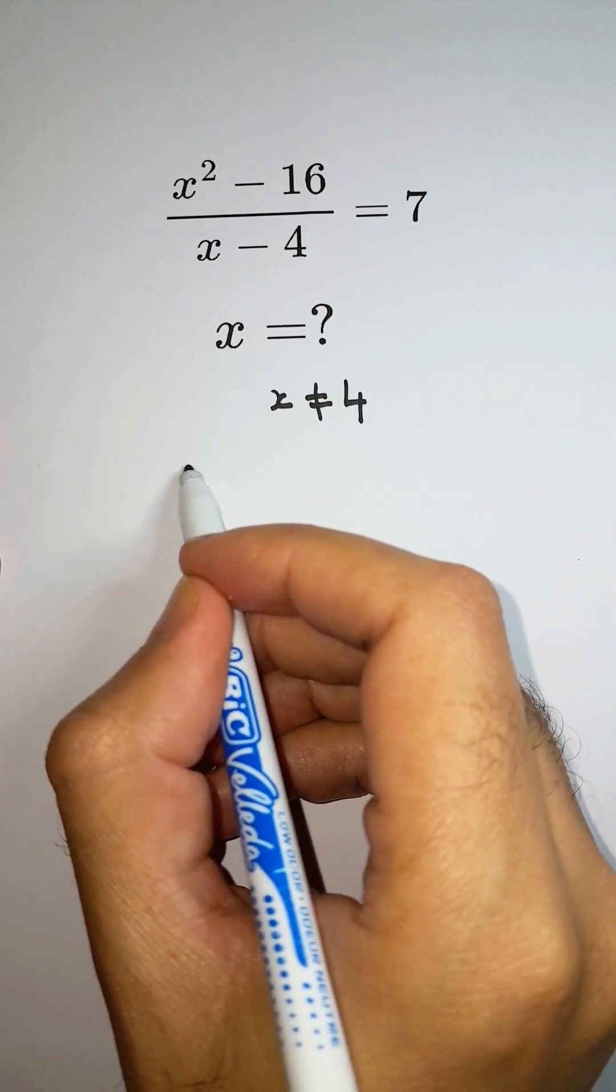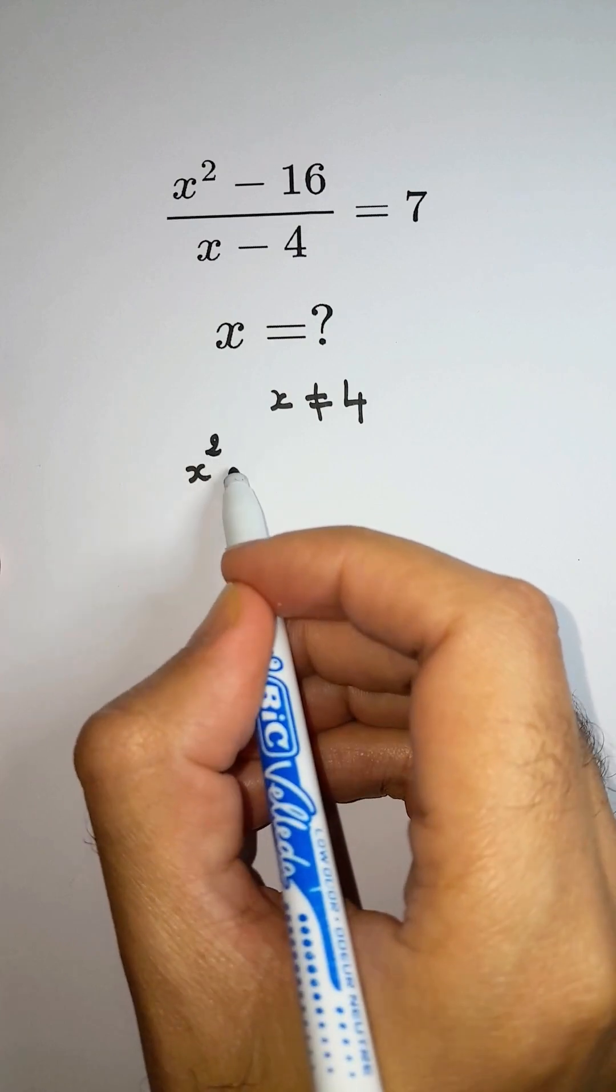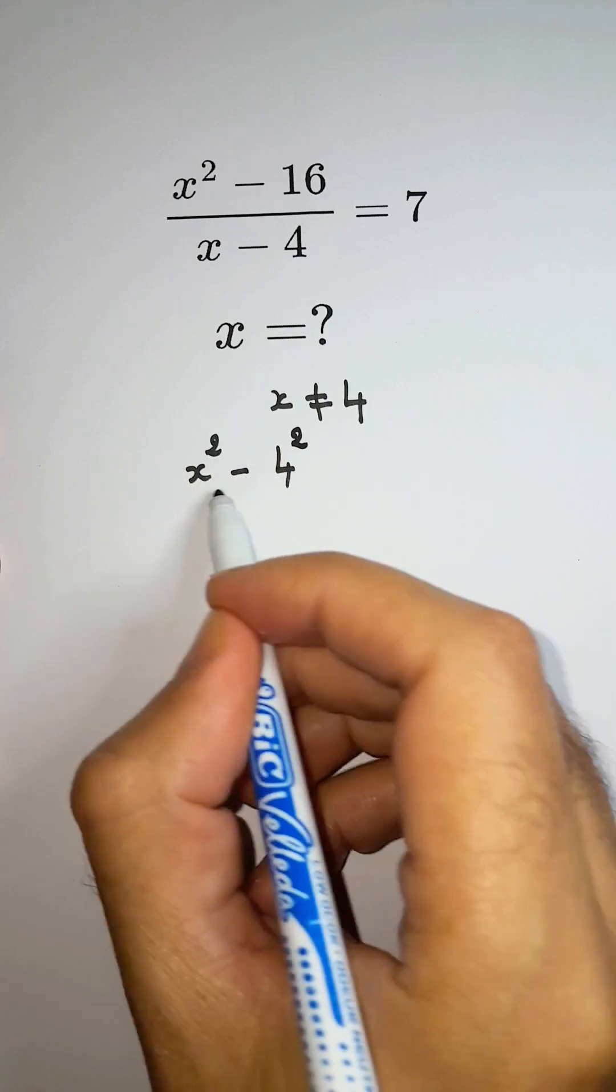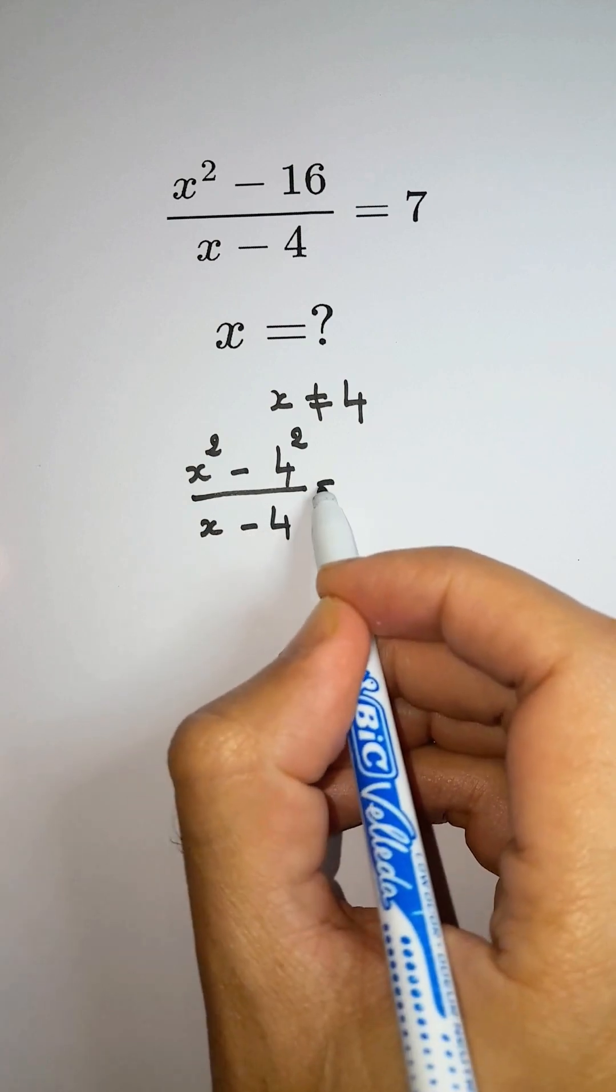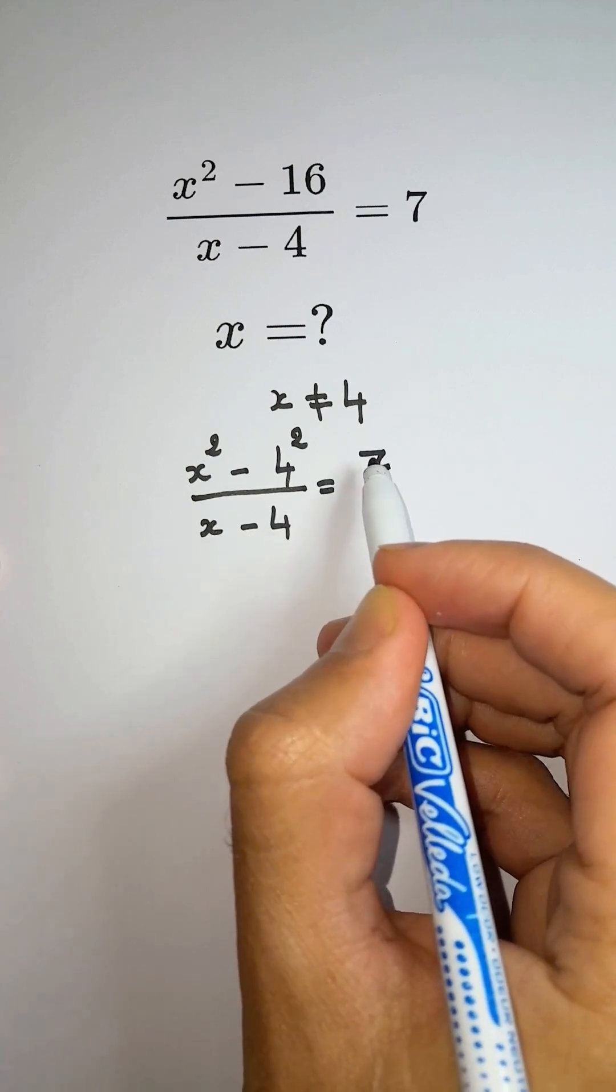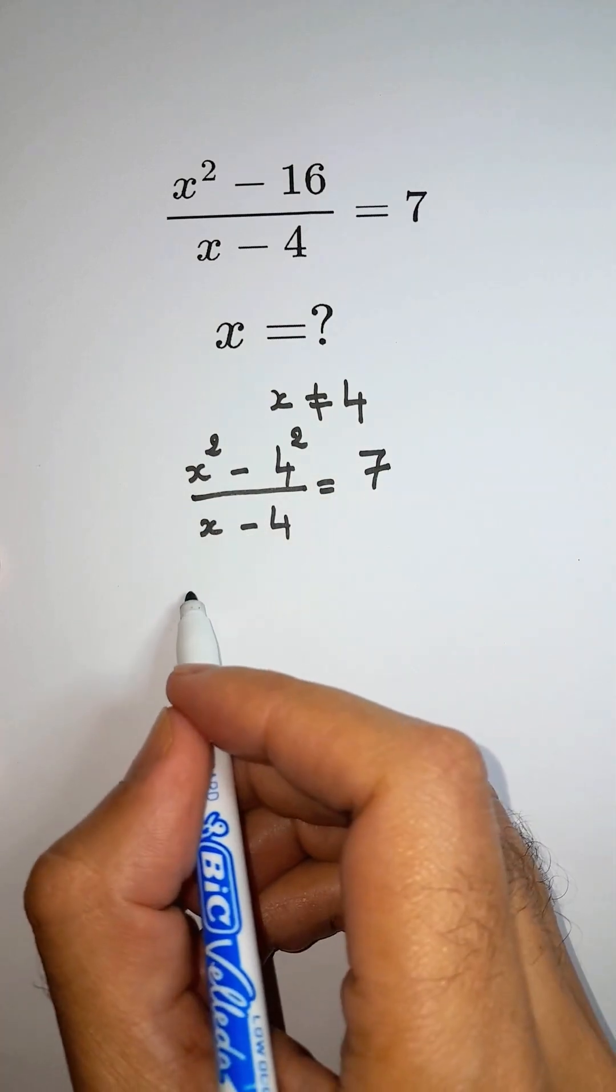Don't forget, x cannot be 4. Look at the top, x squared minus 16 is the classic difference of squares. So we rewrite it as x minus 4 times x plus 4.